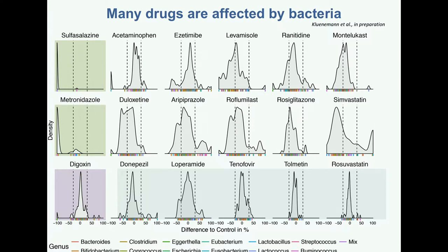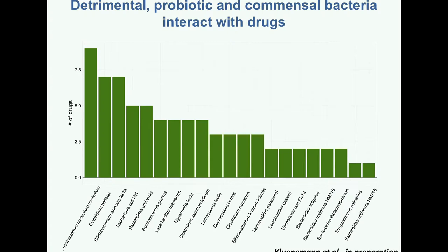This was quite surprising because if you look into the literature, the number of known interactions described is quite few, and ours is a relatively small screen. Just to extrapolate: I would expect a similar hit rate if we increased the screen. If you look at the types of bacteria doing it, we have screened with 20 bacteria so far, selected for diversity in terms of functions they play in gut ecology or their phylogenetic diversity. We see all types — from common commensals to potential pathogens to probiotic bacteria — interacting with these drugs.